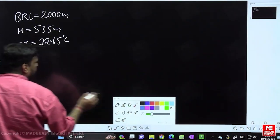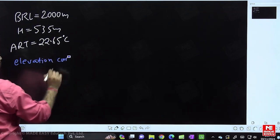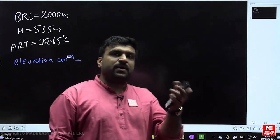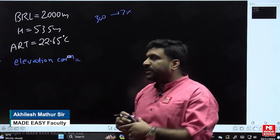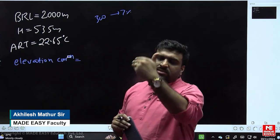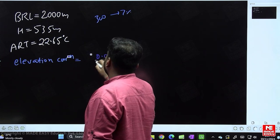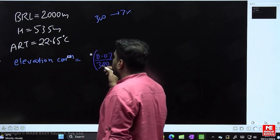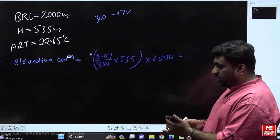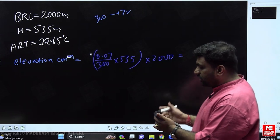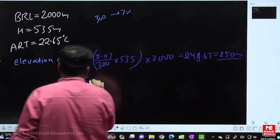As per ICAO guidelines, gradient correction is not applied — only elevation and temperature corrections are used. Elevation correction: BRL is increased by 7% for every 300 m of elevation. So the correction = (0.07/300) × 535 × 2000 = 249.67 ≈ 250 m. Therefore, the corrected length after elevation correction is 2000 + 250 = 2250 m.